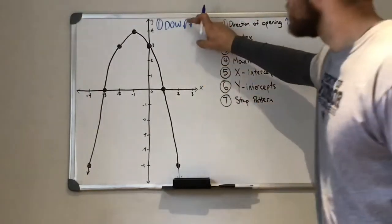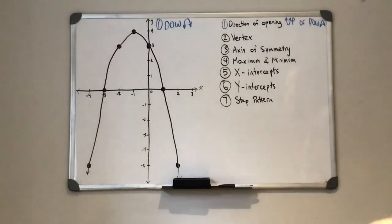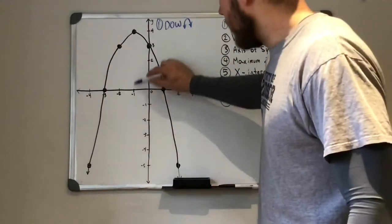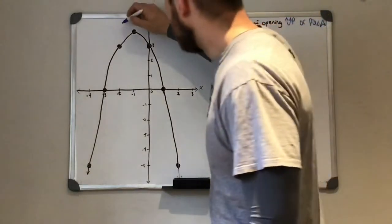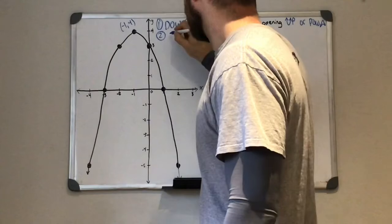So there's our first key feature of this parabola. Our second one, the vertex. This is kind of the highest or lowest point in our graph. So you can see here at negative one and four. So our vertex.